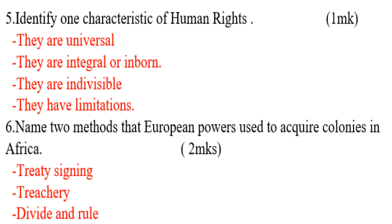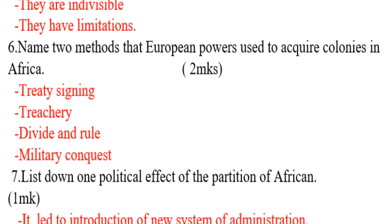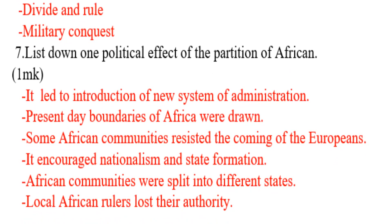Question number six: name two methods that European powers used to acquire colonies in Africa. First, treaty signing, where the authority of the community was made to sign documents they could not read. Second, trickery. Third, divide and rule — where they divided united communities, causing members to fight each other, allowing European powers to take control. Fourth, military conquest, where they used military force to defeat Africans.